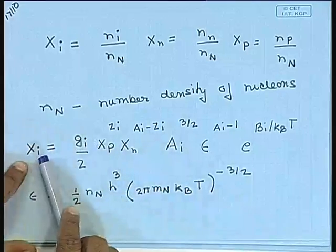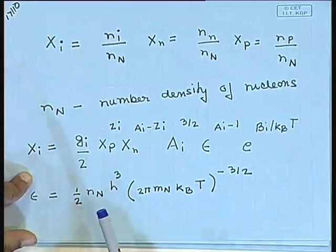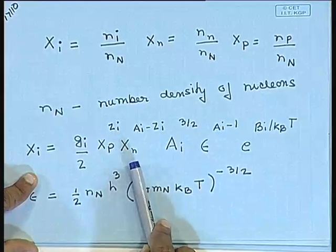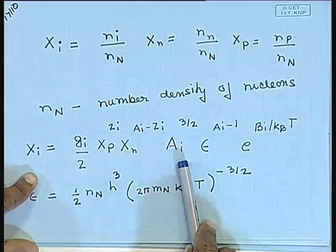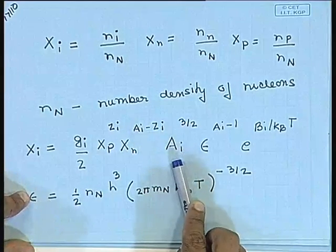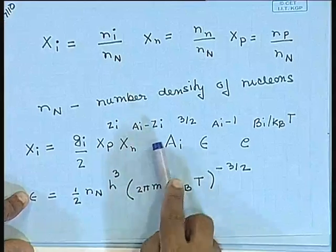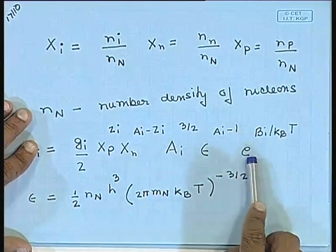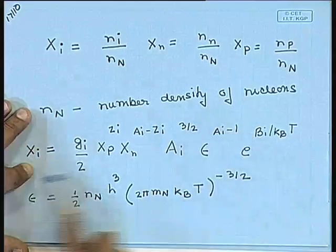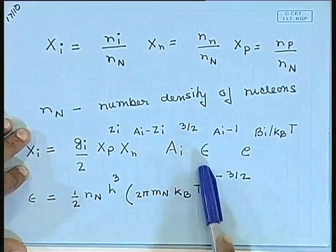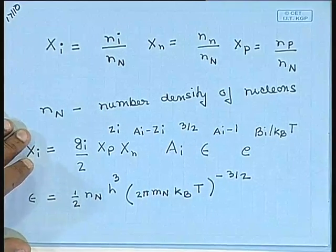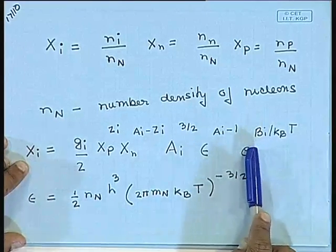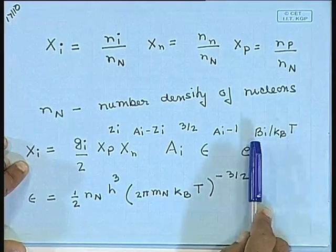In this formula, g_i is the number of spin states which this nucleus can have, x_p is the nucleon fraction in protons, x_n is the nucleon fraction in neutrons, A_i is the atomic mass number, z_i is the atomic number, epsilon is this factor over here, and there is this factor e to the power B_i by kT, where B_i is the binding energy of the nucleon. This number epsilon is extremely small.